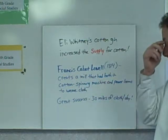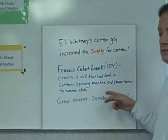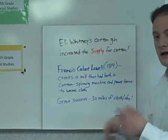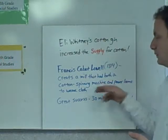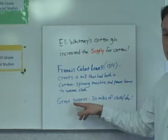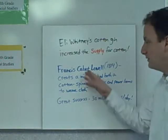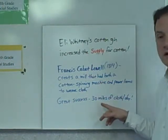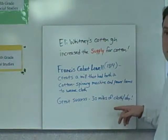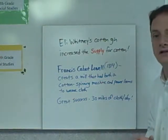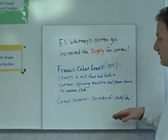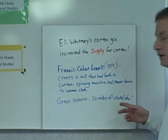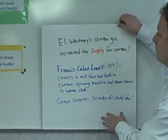Francis Cabot Lowell in 1814 created a mill that had both a cotton spinning machine and a power loom to weave cotton. This factory would spin the cotton into cloth and then weave it. Lowell's cotton mill factory produced 30 miles of cloth in a day, which was phenomenal considering the technology they had at that time.